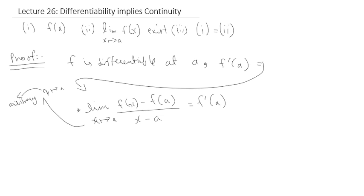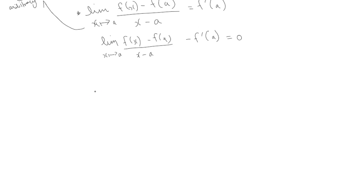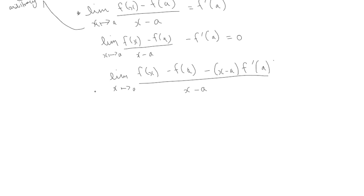If I bring f'(a) to the other side, I can re-express the limit as: f of x minus f of a divided by x minus a, minus f'(a), equals zero. Taking the LCD, we get f of x minus f of a minus (x minus a) times f'(a), all divided by x minus a, equals zero.